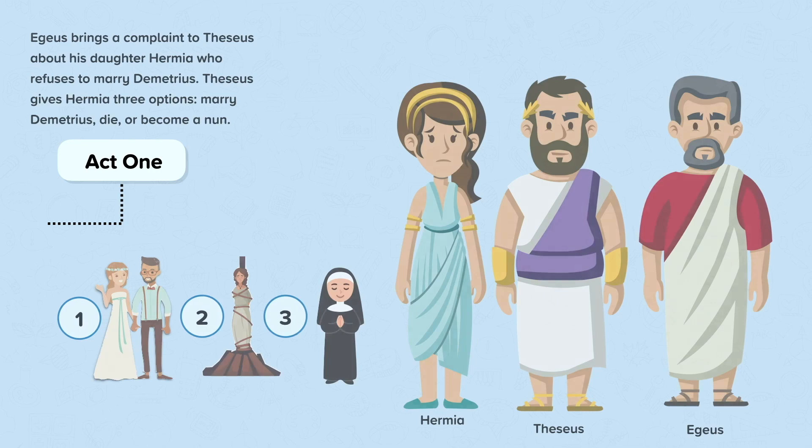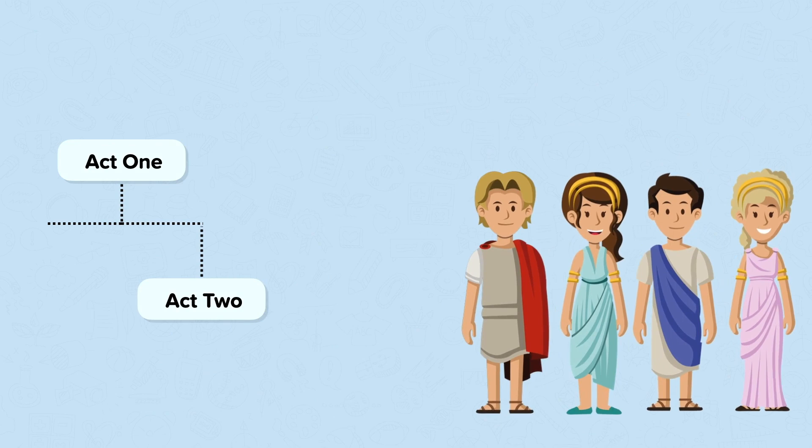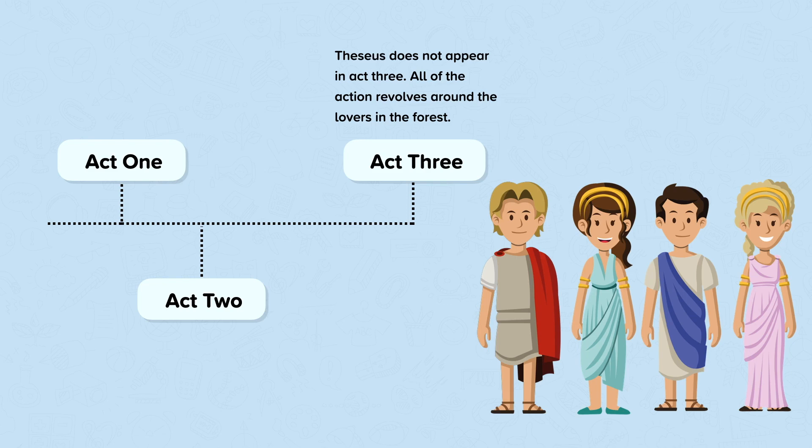Theseus does not appear in Act 2, nor does he appear in Act 3. In both of these acts, all of the action revolves around the four lovers — Helena, Hermia, Demetrius, and Lysander — who are in the forest.